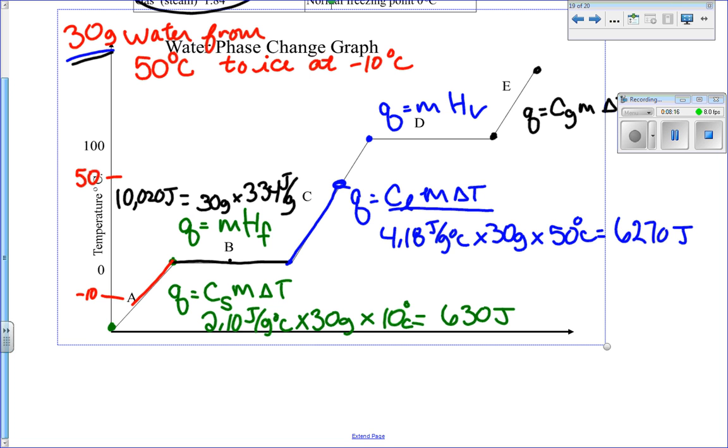So this process, just kind of going back over it, I had to cool it from 50 down to zero, and that took 6,270 joules. Then I had to freeze it, so I had to lose 10,020 joules. Plus, and then I had to then cool it some more, and that took 630 joules. So all I'm going to do is I'm going to add up all these numbers. So it's like taking little legs of your trip. How much did it end up costing me?